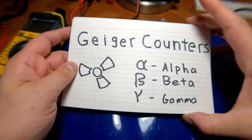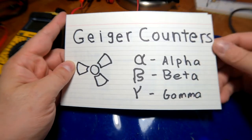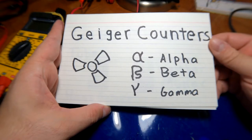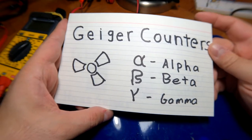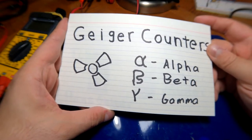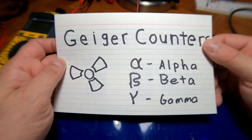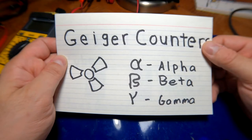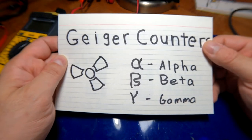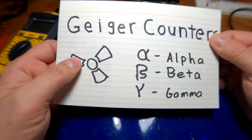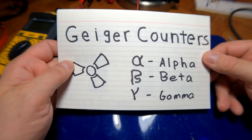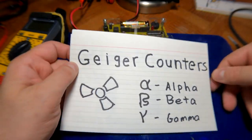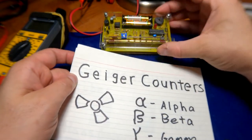Geiger counters are a thing that most people at least have heard of and are familiar with from things like movies and television, especially if you've seen shows like Chernobyl and so forth. But most of us have never actually used one or have had very limited experience with them, and even fewer people know how they work. And so I thought it would be interesting to go over not only the principles of how a Geiger counter works, but to show you an actual Geiger counter in operation.